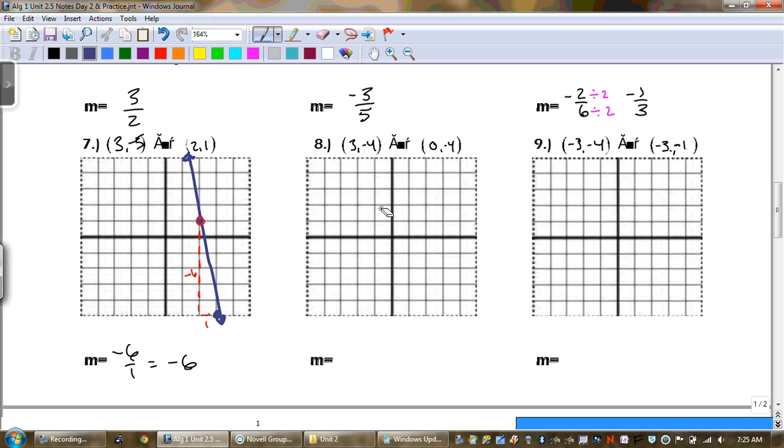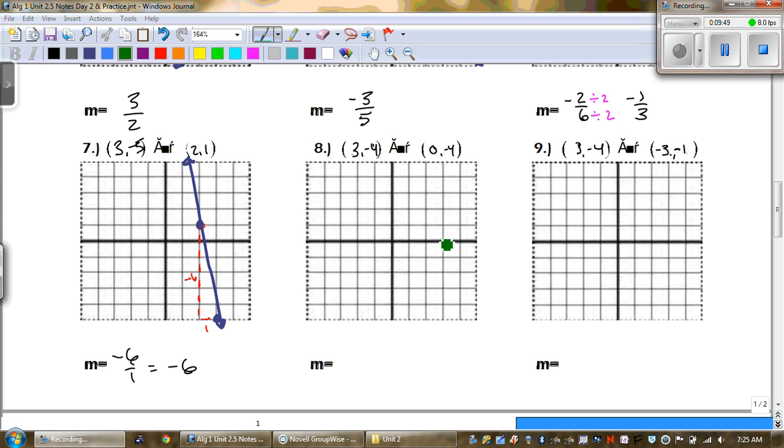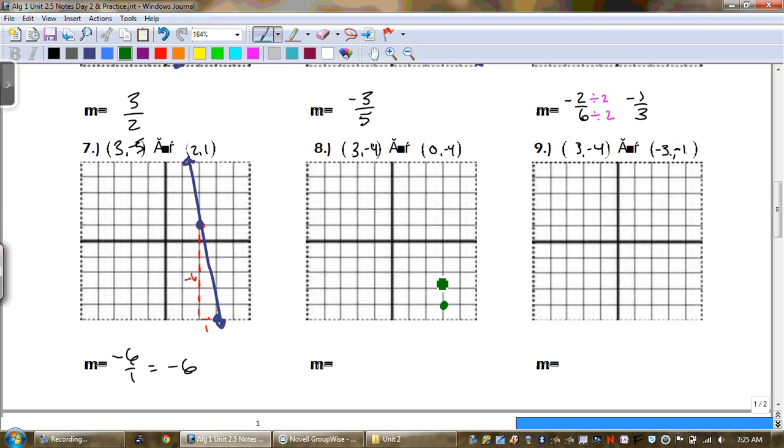So we got 3, positive 3, negative 4, which is right there. And 0, negative 4. And when I draw this going straight across, do we have a rise? Does it go up at all? No, it's 0. And then to the right we go 3. But 0 over 3 is the same thing as 0. And you can tell just by looking at it, it's a horizontal line, guys. If it's a horizontal line, you should know right away that the slope is 0.